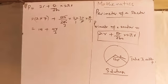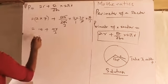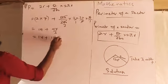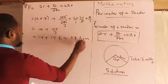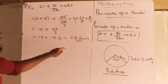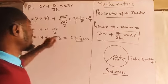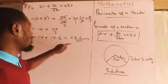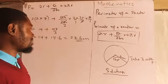We solved the length of arc before and got 14.6. Dividing gives 14 plus 14.6, which equals 28.6 centimeters. So the perimeter of the sector is 28.6 centimeters.